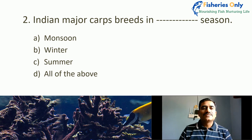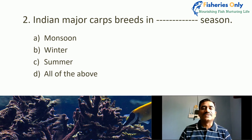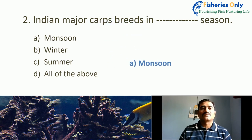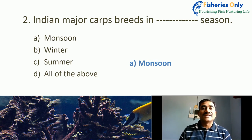Second MCQ: Indian major carp breeds in which season? Options are monsoon, winter, summer, or all of these. The right answer is monsoon. Mostly fish, including Indian major carp, breed and give their eggs in the monsoon season only — that is the rainy season.